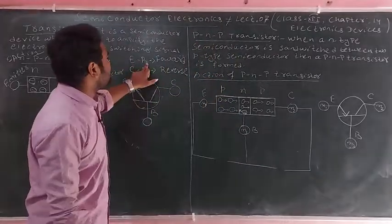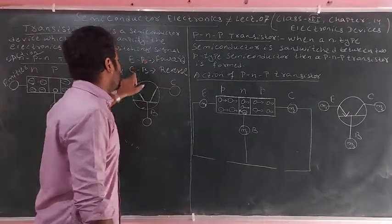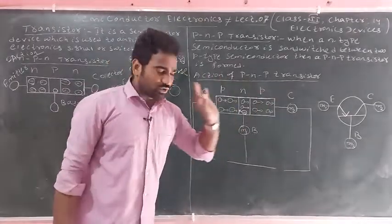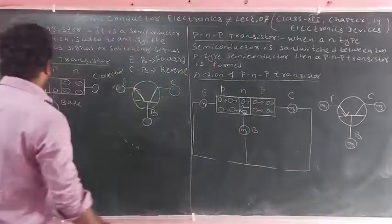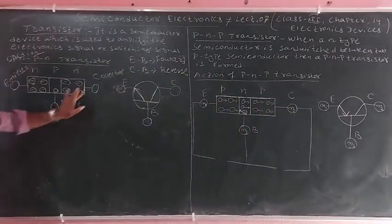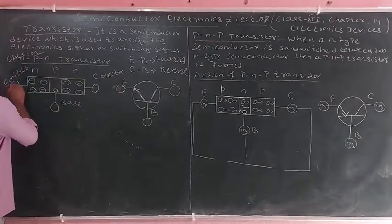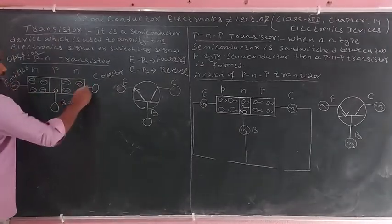In the transistor, we have the emitter-base region and the collector-base region. The emitter-base junction is forward biased and the collector-base junction is reverse biased. So the transistor has three terminals: emitter, base, and collector.